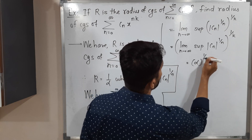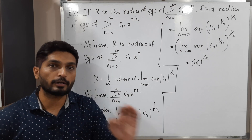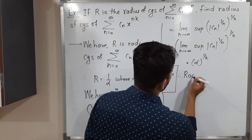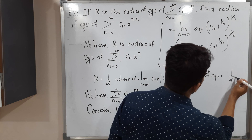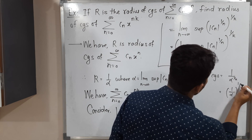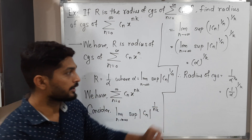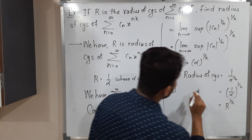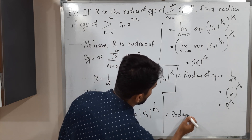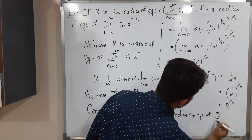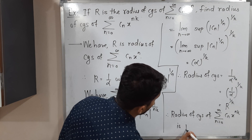The value of that limit supremum is alpha, so this equals alpha raised to 1 by k. Finally, the radius of convergence is the reciprocal of this limit, which is 1 by alpha raised to 1 by k, or equivalently 1 by alpha, whole raised to 1 by k. Since 1 by alpha equals capital R, this gives R raised to 1 by k. Therefore, the radius of convergence of the series summation n from 0 to infinity, cₙ x raised to nk, is R raised to 1 by k.